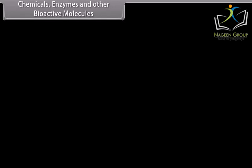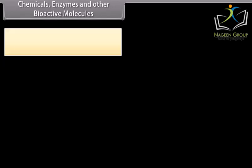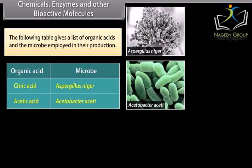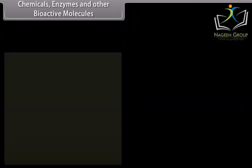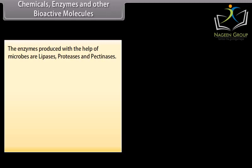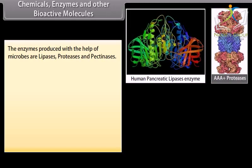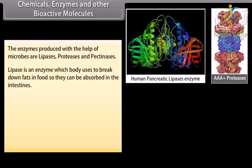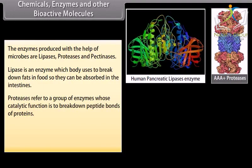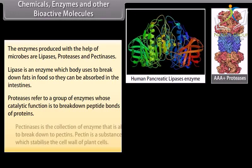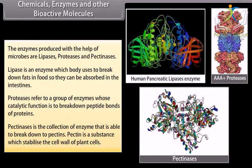Chemicals, enzymes, and other bioactive molecules. The following table gives a list of organic acids and the microbe employed in their production. The enzymes produced with the help of microbes are lipases, proteases, and pectinases. Lipase is an enzyme which the body uses to break down fat in food so it can be absorbed in the intestines. Proteases refer to a group of enzymes whose catalytic function is to break down peptide bonds of proteins. Pectinases are a collection of enzymes able to break down pectins — the substance which stabilizes the cell wall of plant cells.